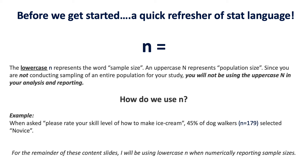So how do we use this small n? Here's an example. Maybe my question was: please rate your level of skill for how to make ice cream. 45% of dog walkers (n = 179) selected novice. So we would always have the percentage first — the percentage of participants who selected a particular response — followed by the n and the raw number of participants who selected that response option.